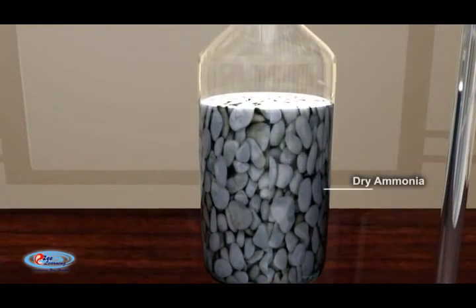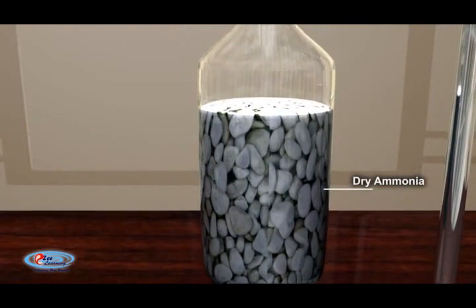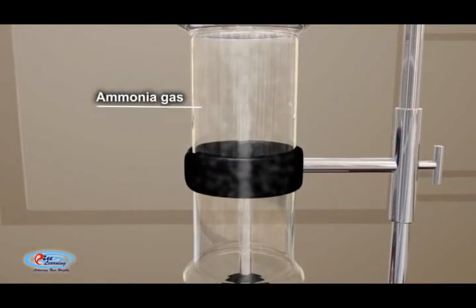Notice that the ammonia is collected with the gas jar upside down. This is because ammonia is less dense than air.